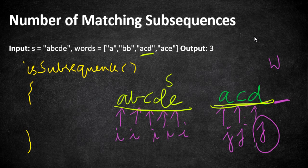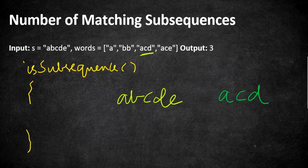If we work this way by iterating all the words and checking whether they are subsequences, it is going to run in O(n² · l) where l is the average length of the words given. This will definitely cause a time limit exceeded, so we are going to make a few changes to the brute force solution to make it work in an optimal way.